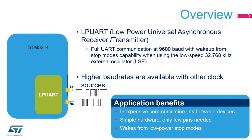The Low-Power Universal Synchronous Asynchronous Receiver, or LPUART, provides full UART communications at 9,600 baud when the LPUART is clocked using a low-speed external 32.768 kHz oscillator, or LSE. Higher baud rates can be reached when it is clocked by clock sources different from the LSE clock.